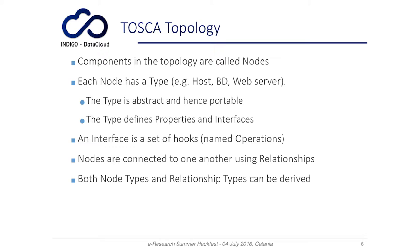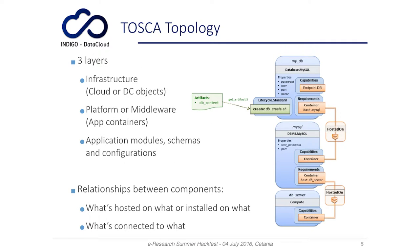Components in the topology are called nodes. Each node has a type. There are some types called normative types because they are directly provided by the standard. The type is abstract and therefore portable. The type defines properties and interfaces. For example, the properties of the node of type database MySQL include the password of the user, the name of the user, the port to connect to access the database, the name of the database, and so on.